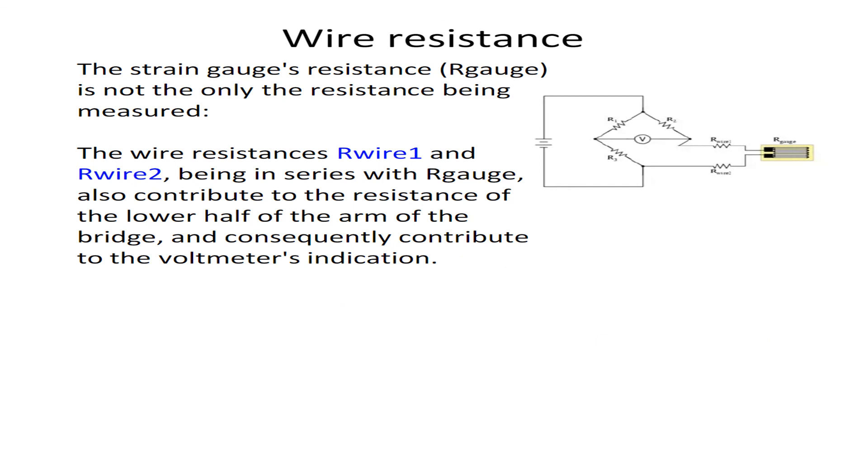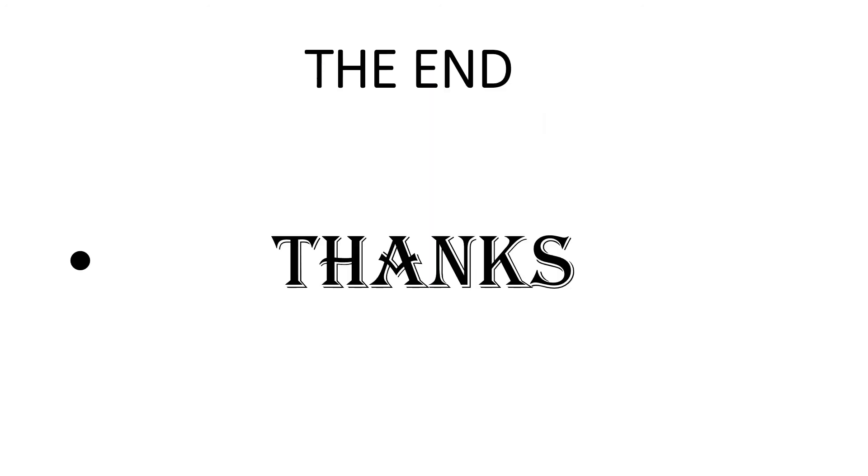Wire resistance: The strain gauge resistance R_gauge is not the only resistance being measured. The wire resistances R_wire1 and R_wire2, being in series with R_gauge, also contribute to the resistance of the lower half of the arm of the bridge and consequently contribute to the voltmeter's indication. This is the complete diagram which is a bridge-type diagram having R_gauge in both arms, R1, R2, R3 are the resistance arms, and the voltmeter to measure the voltage. So this is all about strain gauge transducer and this completes the session. Thank you.